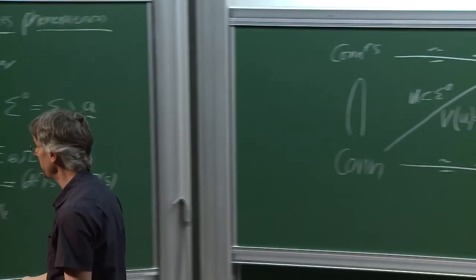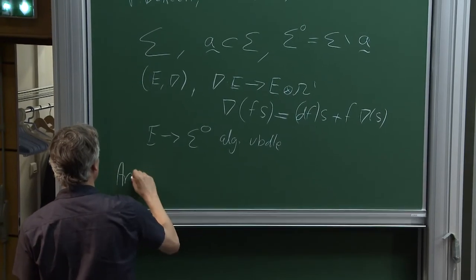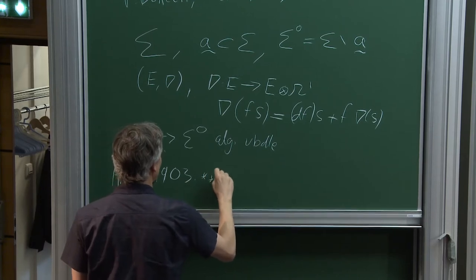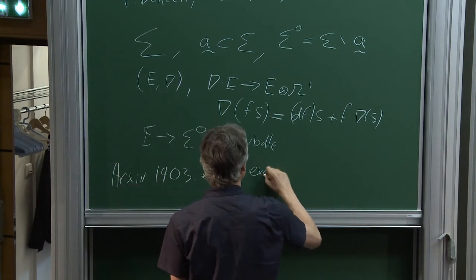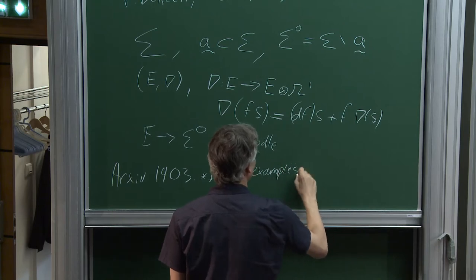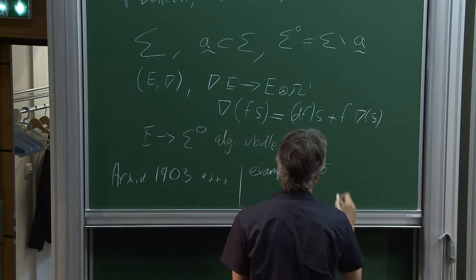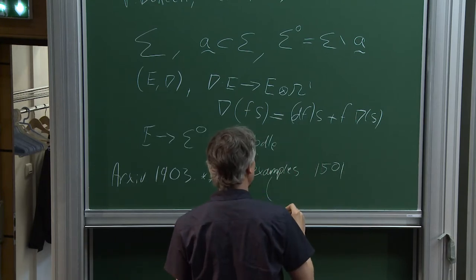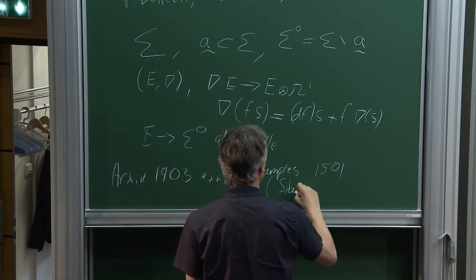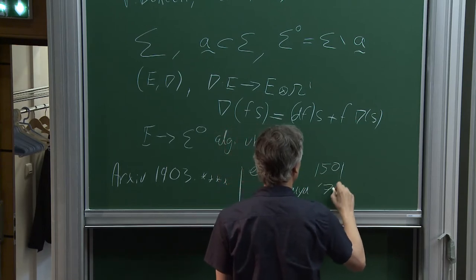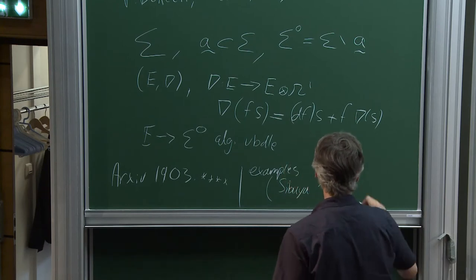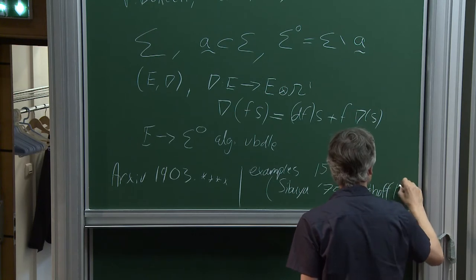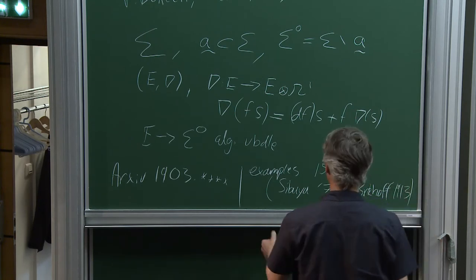There is a paper on the arXiv from March this year explaining this, and the basic examples are in a paper from around 1501. That paper essentially explains how to read a book of Sibuya from 1975. It should probably talk more about the paper of Birkhoff — lots of this is already in Birkhoff's paper of 1913.